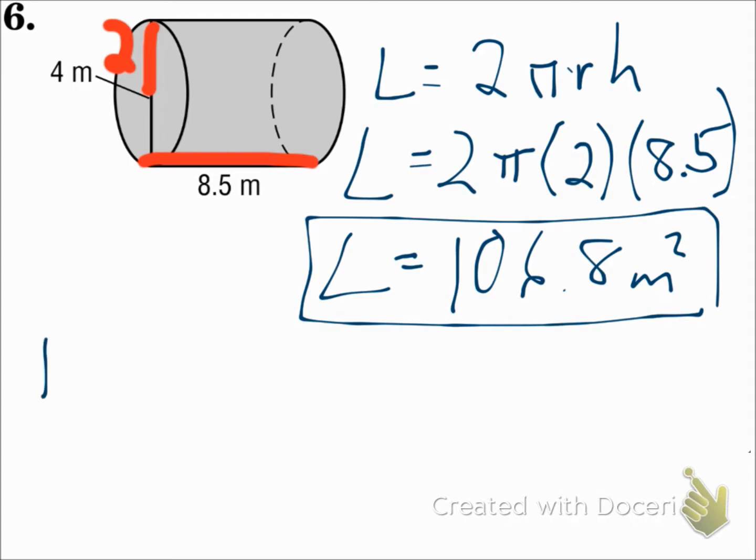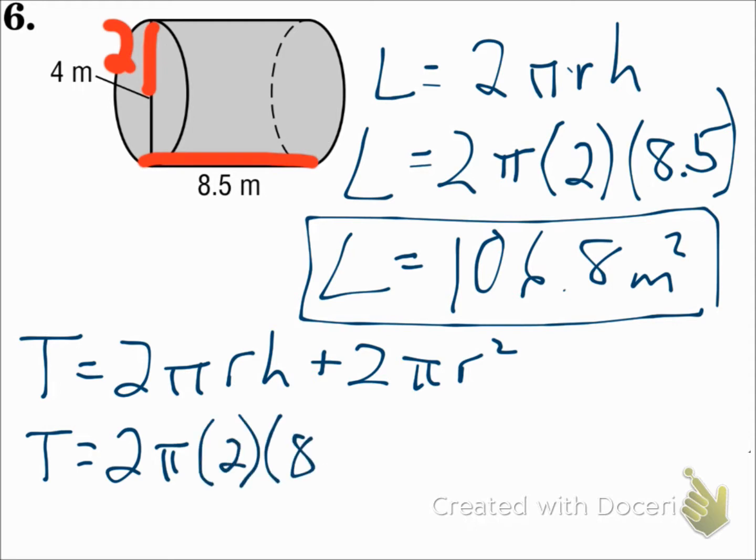For total surface area of a cylinder, use the formula 2 pi RH plus 2 pi R squared. The radius is 2. The height is 8.5. And the radius is 2 again. Punch all that in, and you get 131.9 meters squared.